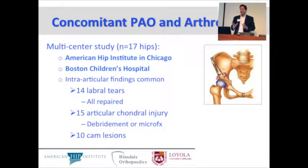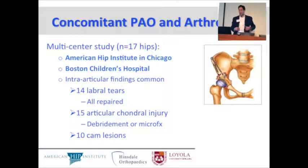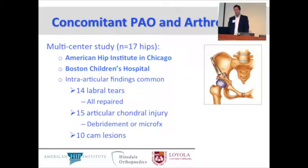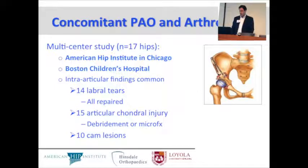In looking at concomitant PAO and arthroscopy, we've found a useful role for arthroscopy in these patients. We did a multicenter study with Boston Children's and looked at the intra-articular findings in our first series of 17 concomitant procedures. We found intra-articular pathology in almost all of them — usually labral tears or cartilage damage — and these injuries were addressable arthroscopically.